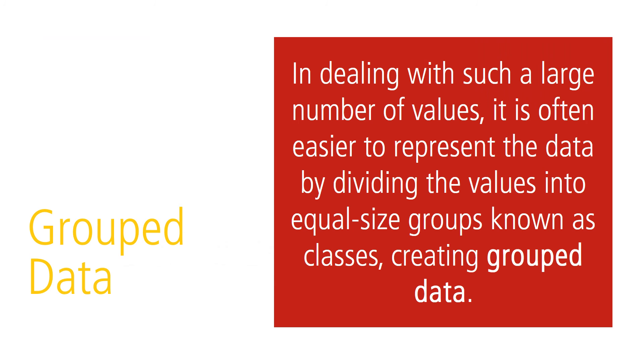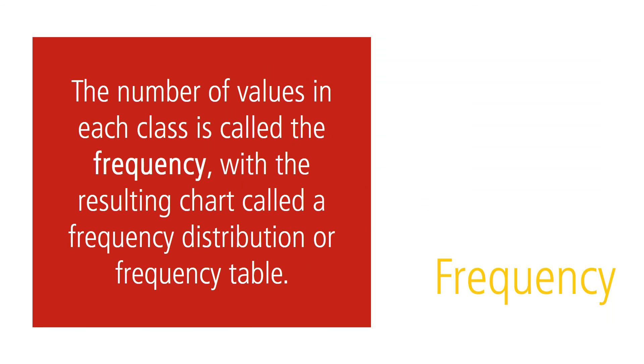Frequently, business statistics deal with hundreds, even thousands of values in a set. In dealing with such a large number of values, it's often easier to represent the data by dividing the values into equal size groups known as classes, creating grouped data. The number of values in each class is called the frequency, with the resulting chart called the frequency distribution or frequency table. The purpose of frequency distribution is to organize large amounts of data into a more compact form without changing the essential information contained from those values.